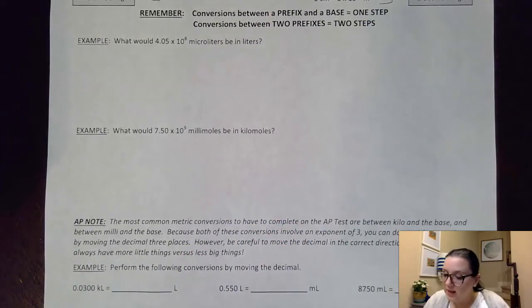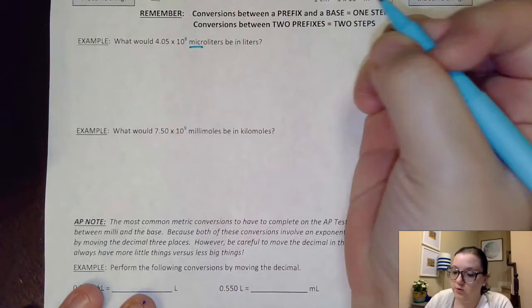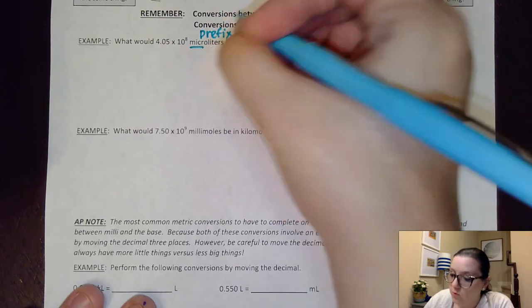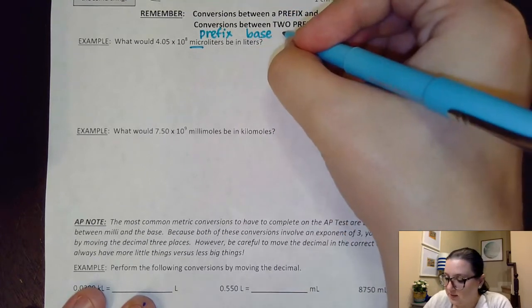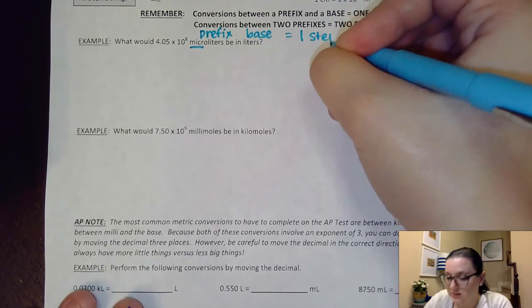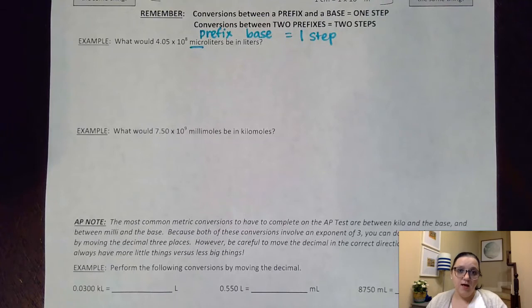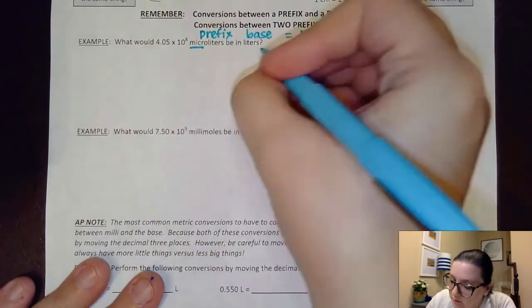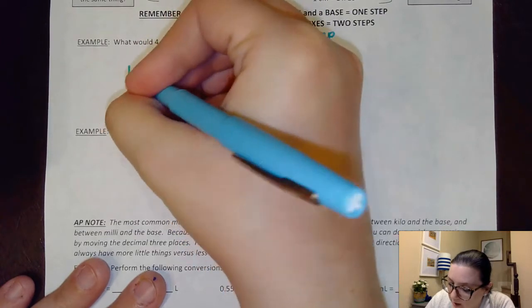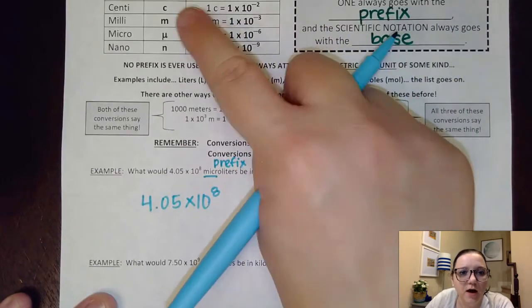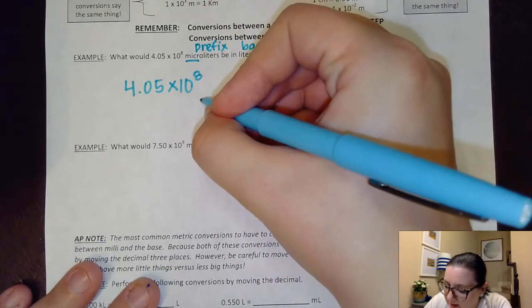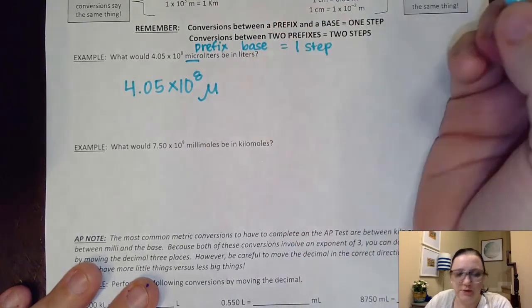First off, this question asks what would 4.05 times 10 to the eighth microliters be in liters. Well I see that micro has one of those prefixes on it whereas liters doesn't, so that would be what we would consider our metric base unit here. So I know between a prefix and a base that that is going to take only one step on a dimensional analysis. Now I'm going to show you first how I set up my dimensional analysis, but then I'm going to show you some other formats for it.